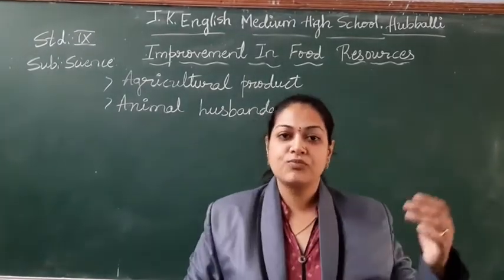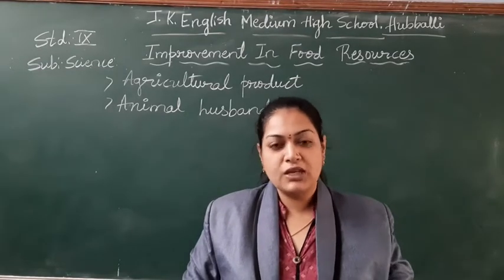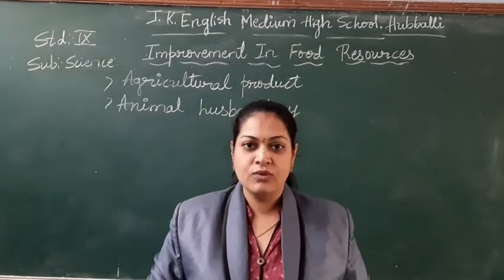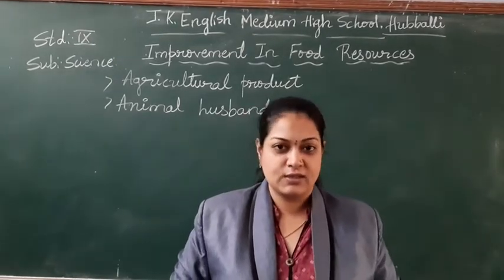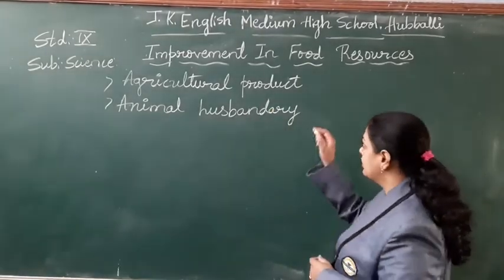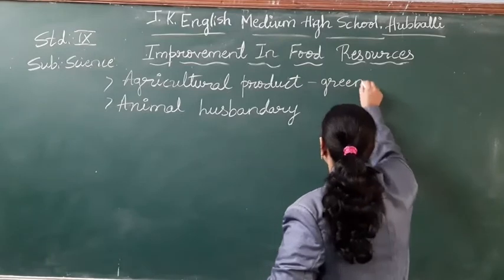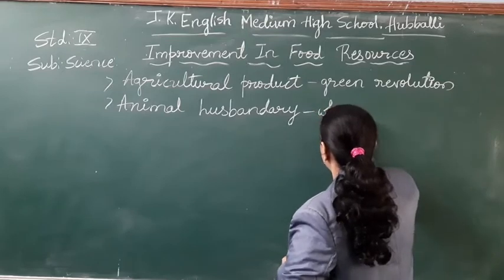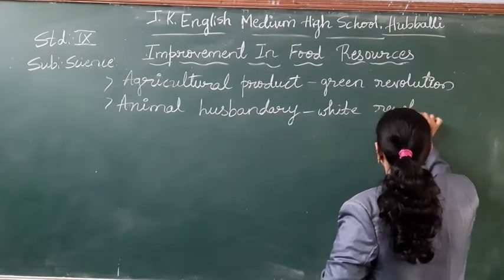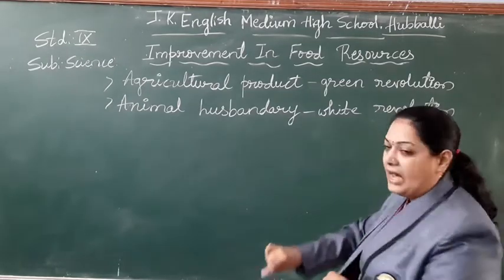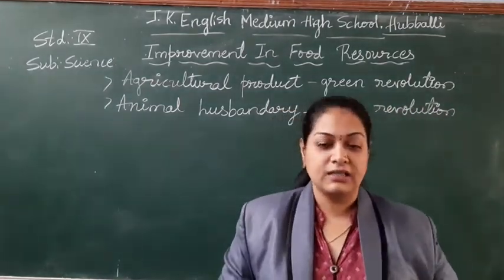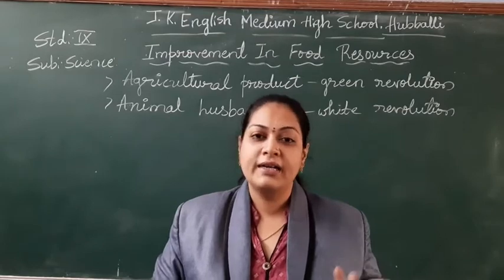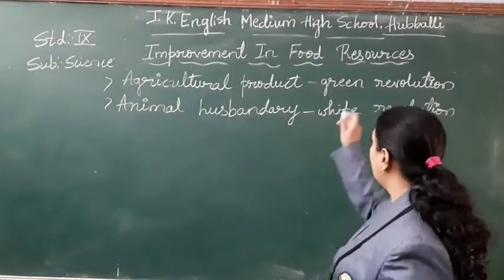Right from the olden days, when the population increase caused scarcity of food, they were trying to improve the food resources. You might have learned about the green revolution. What is the green revolution? As the name says, in the field of agriculture — green means about the crops — they were trying to improve the quality and quantity of the crops. That is the green revolution.